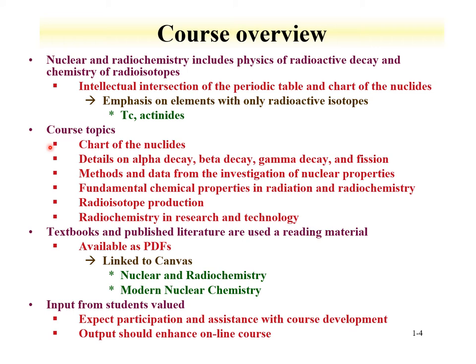The course topics include the chart of the nuclides, details on alpha decay, beta decay, gamma decay, and fission — you should understand what the differences are by the end of the course. We'll cover methods and data obtained from investigating nuclear properties, fundamental chemical properties involved in radiation and radiochemistry, and particularly how they intersect with elements only available as radioactive isotopes, such as technetium and the actinides. We'll discuss how isotopes are produced and how radiochemistry is used in research and technology.